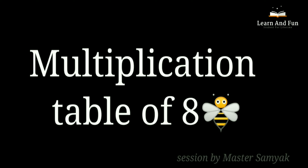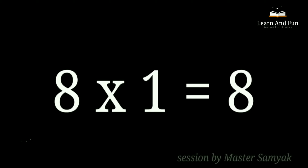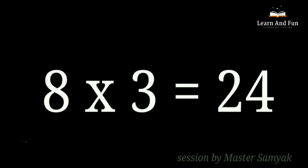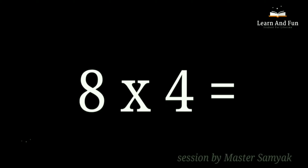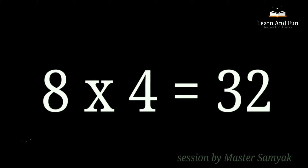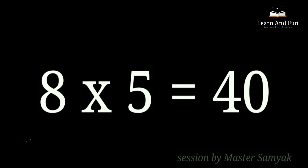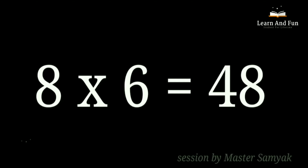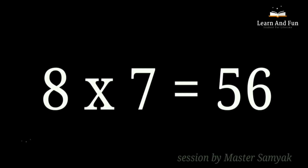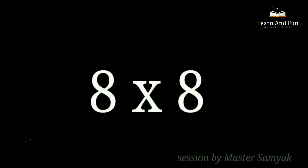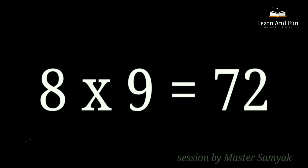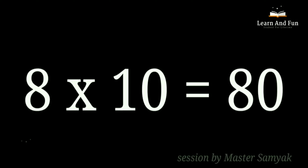Multiplication Table of 8. 8 ones are 8. 8 twos are 16. 8 threes are 24. 8 fours are 32. 8 fives are 40. 8 sixes are 48. 8 sevens are 56. 8 eights are 64. 8 nines are 72. 8 tens are 80.